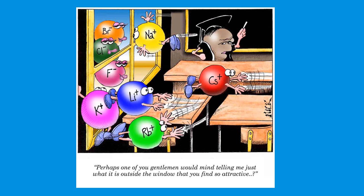This picture sums up what we just talked about. You see the negatively charged particles and positively charged particles. The positively charged particles, which are metals — remember metals form cations — are attracted to the anions, which are the non-metals on the outside, because unlike charges attract.